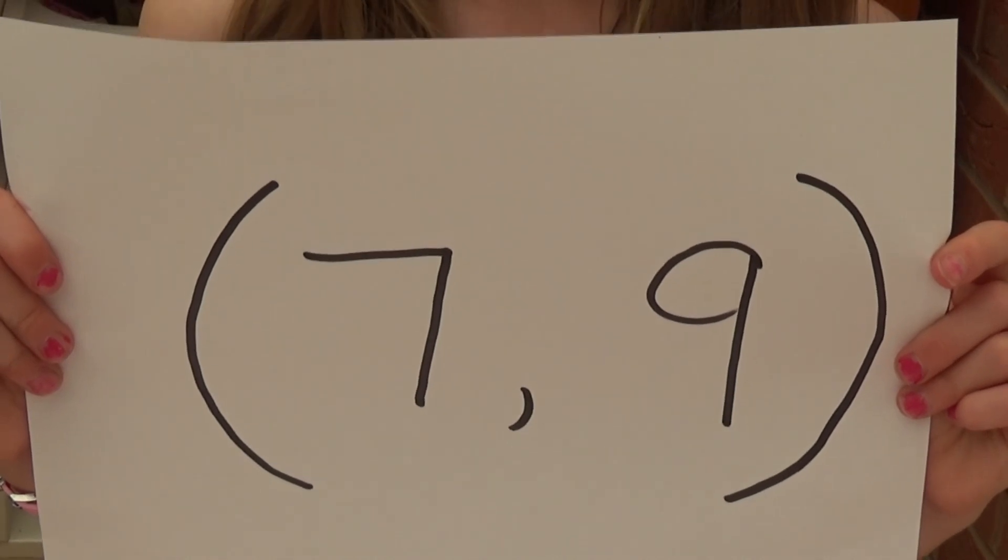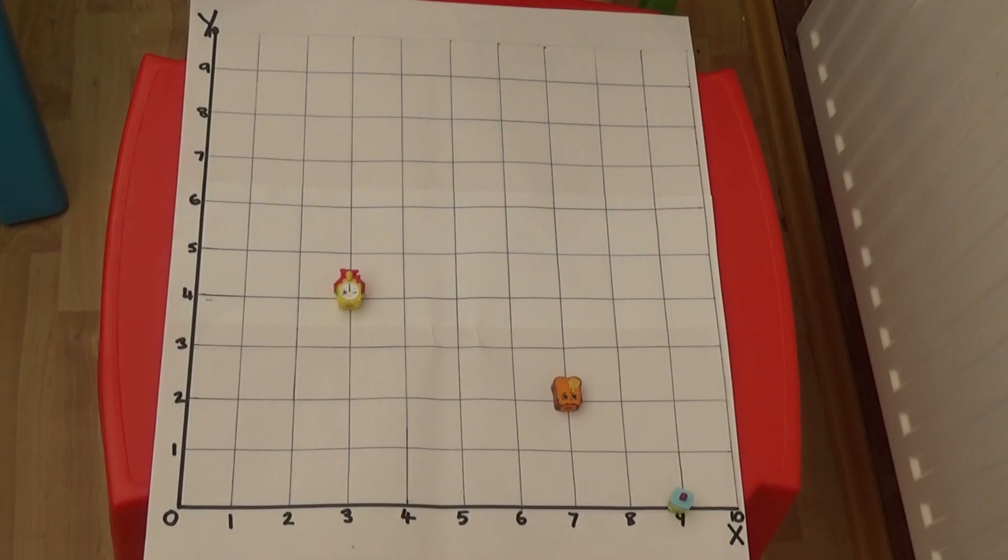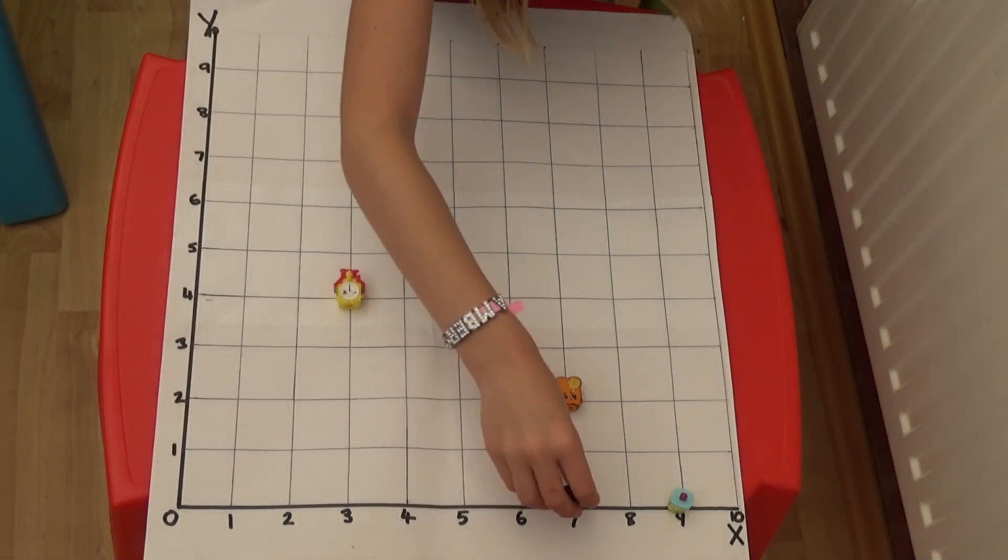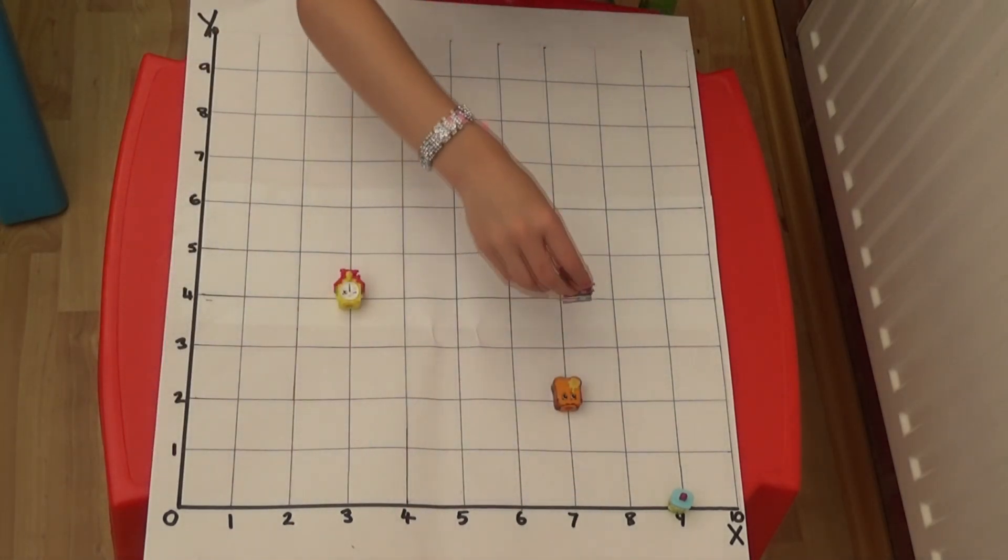My next coordinates are seven, nine. This means I need to go seven along the x-axis and nine up the y-axis.